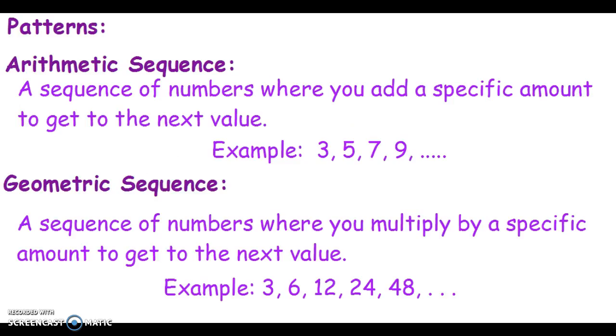Now you don't have to write this down, we're just going to talk about some patterns. There are arithmetic sequences - that's a sequence of numbers where you add a specific amount to get the next value. To get from 3 to 5 I add 2, from 5 to 7 I add 2, from 7 to 9 I add 2. So if I wanted the next two numbers in this pattern, I would take 9 plus 2 is 11, 11 plus 2 is 13. That's arithmetic - I'm adding. So it's either addition or subtraction.